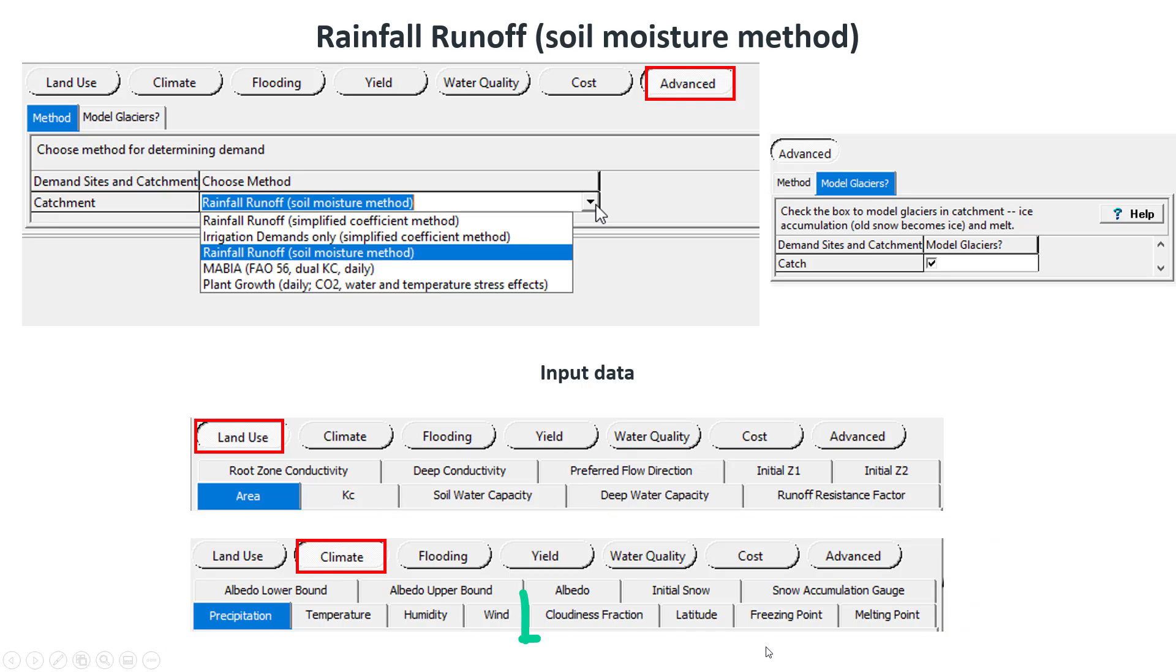The cloudiness fraction is also called relative sunshine duration. Do not enter data of cloud fraction. WEAP calculates evapotranspiration from this input data.